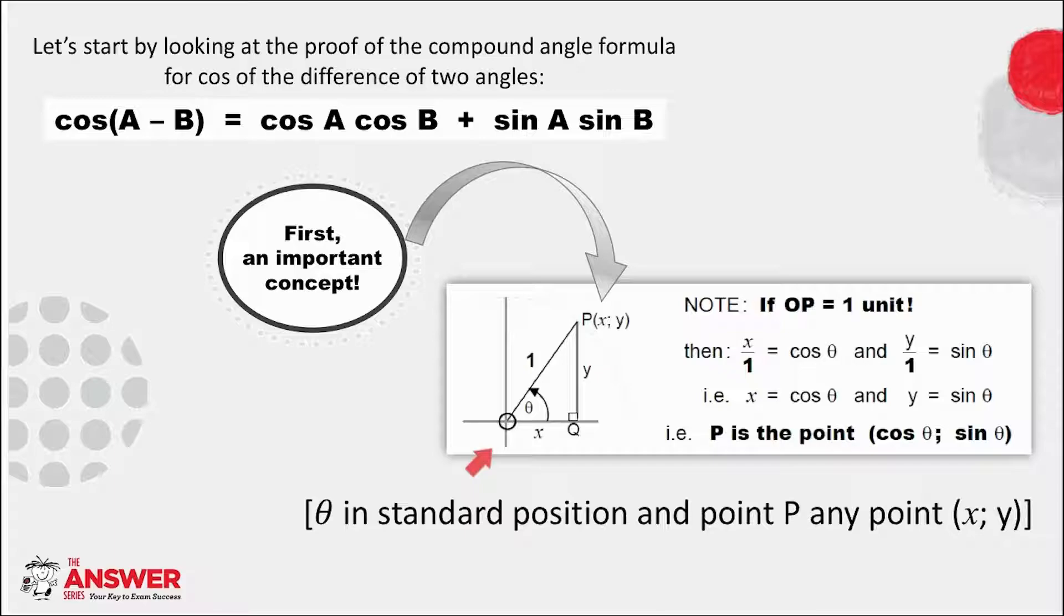Place theta in standard position with P one unit away from the origin in any direction. We use one unit just because it's the simplest. The point P will then have an x-coordinate and a y-coordinate, and if you apply trig ratios in each case, x over 1 is cos of theta and y over 1 is sine of theta. These equations simplified give you that x equals cos theta and y equals sine theta, which makes P the point (cos theta, sin theta). You may want to pause on this for a moment to fully absorb this concept.